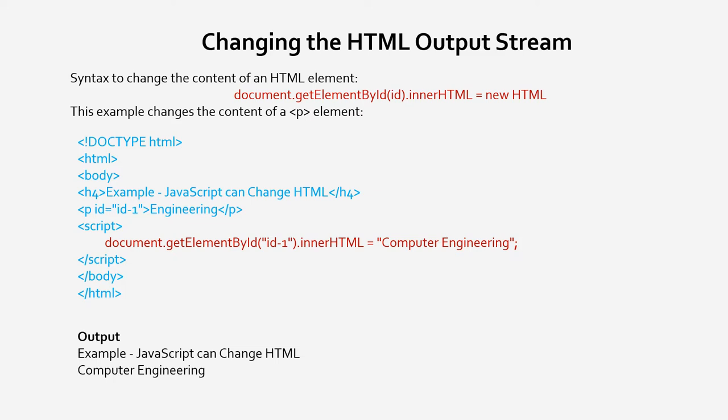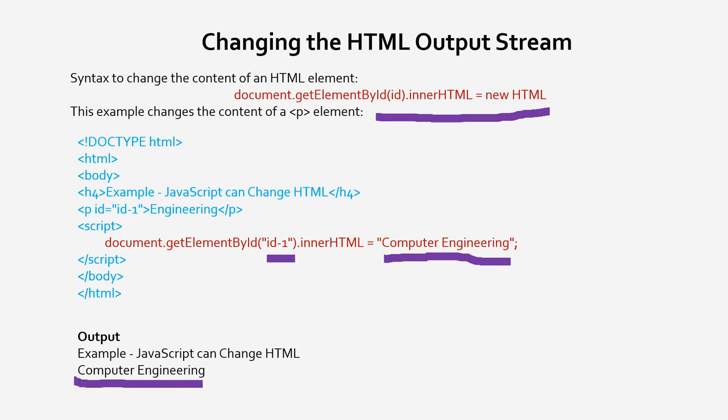Now we discuss changing the HTML output stream. The syntax is: document.getElementById(id).innerHTML = newHTML. In the example, a P tag with id='id1' initially has a value, but during script execution that ID is modified, so the output shows only 'Computer Engineering' — not the original 'Engineering'.